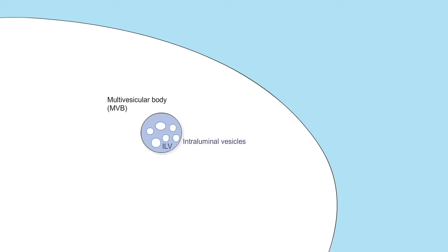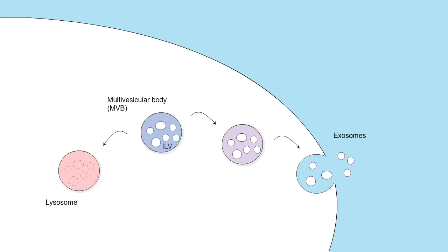Proteins trapped on ILVs are either delivered for degradation through fusion of the MVB with a lysosome, or released into extracellular space upon MVB fusion with the plasma membrane. These released vesicles, called exosomes, can be received by other cells and thus constitute a form of intercellular communication.